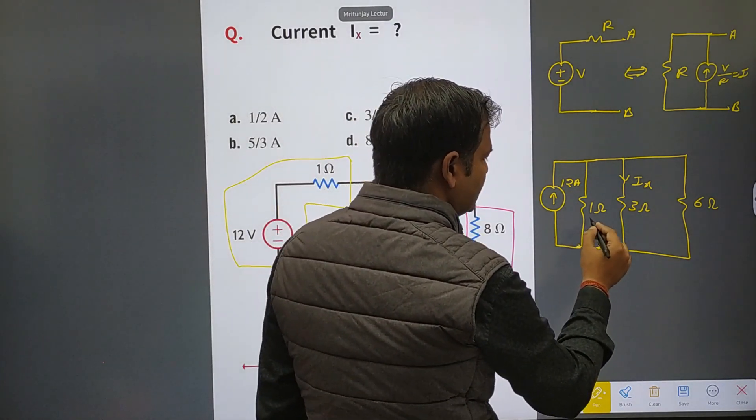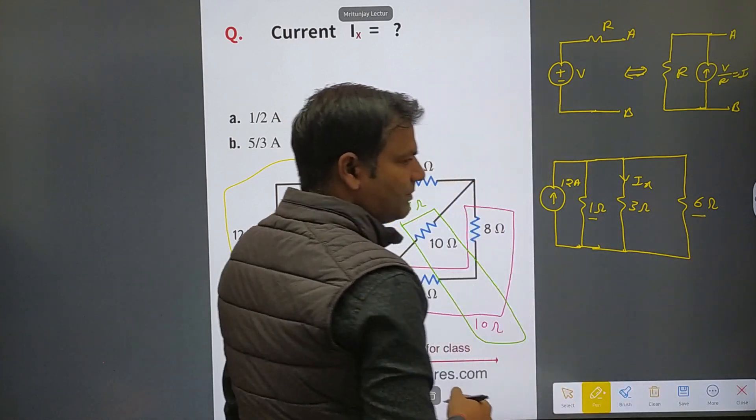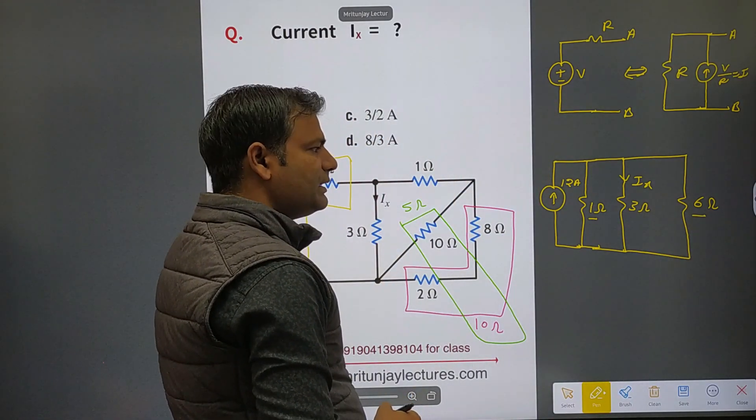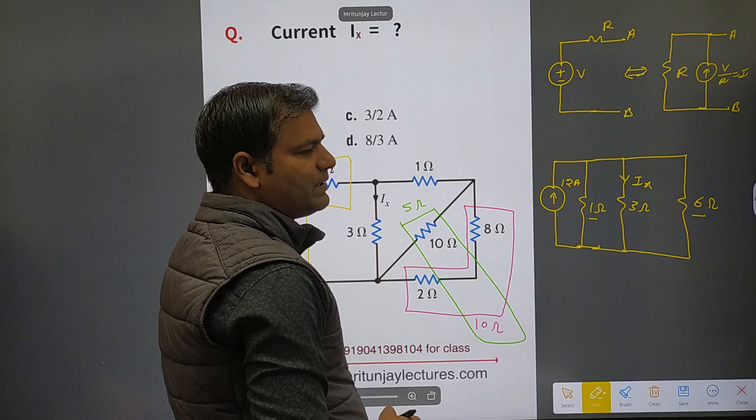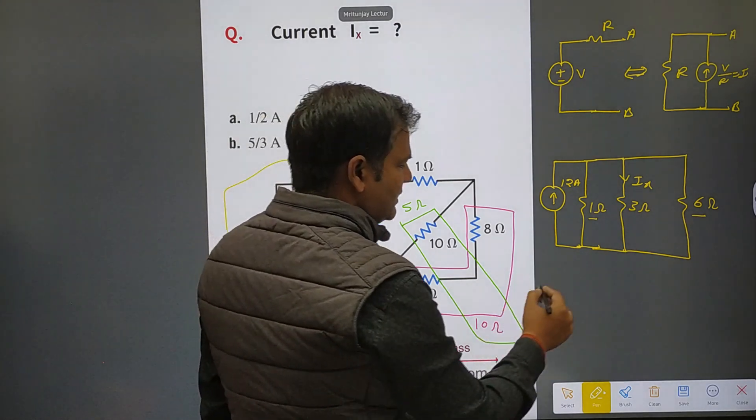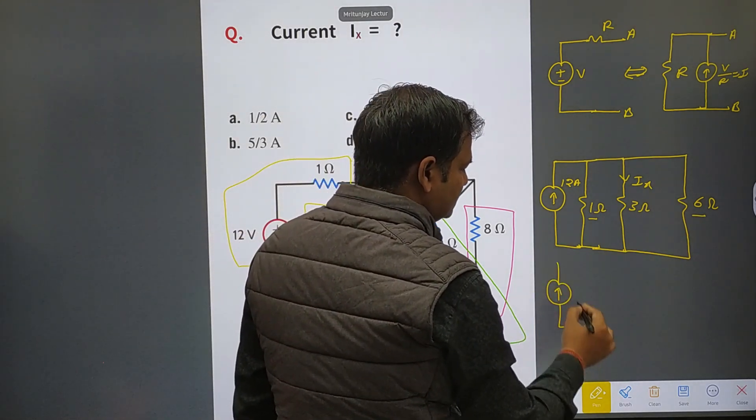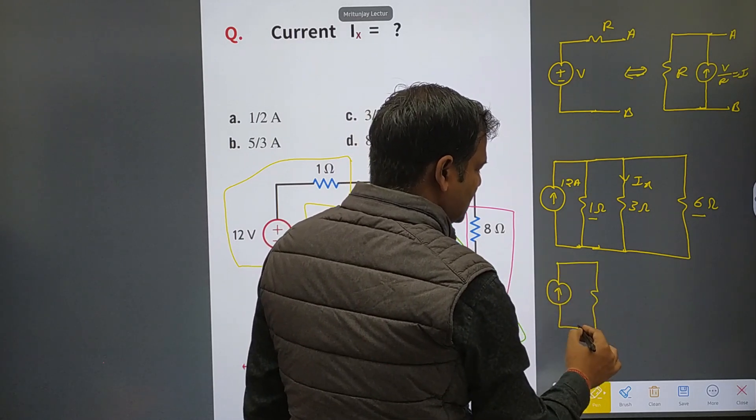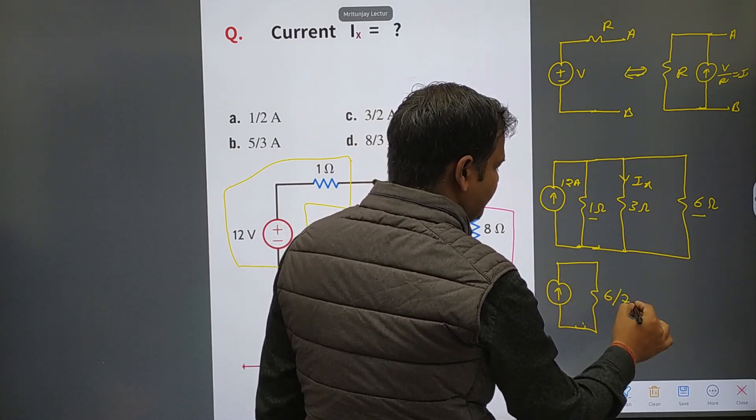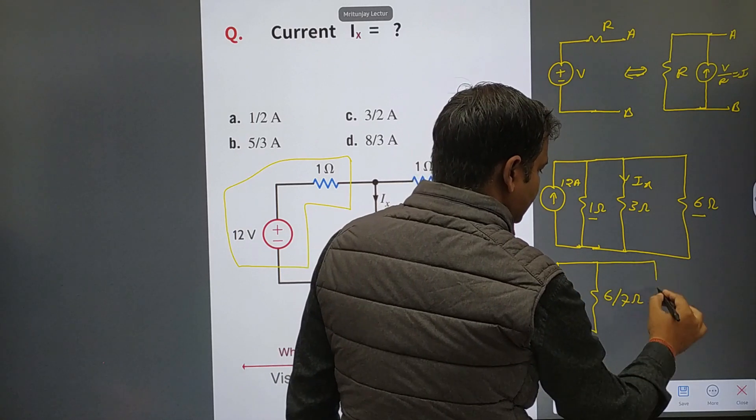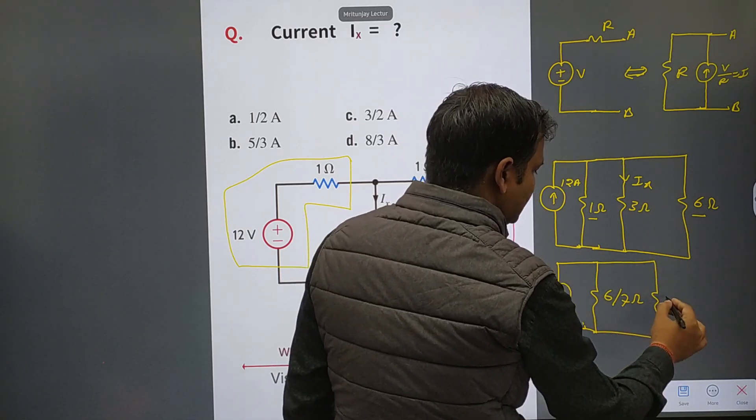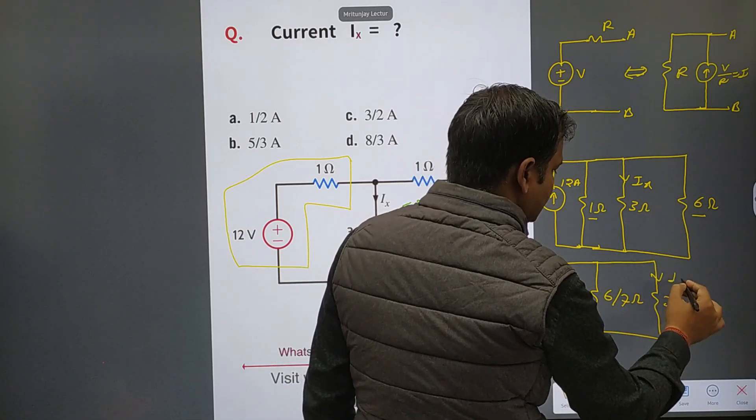That one, this one, this one, and this one are parallel. So 6 into 1 divided by 7, so 6 by 7. That one 6 by 7 ohm, and that resistance 3 ohm, ix, and that is 12 ampere.